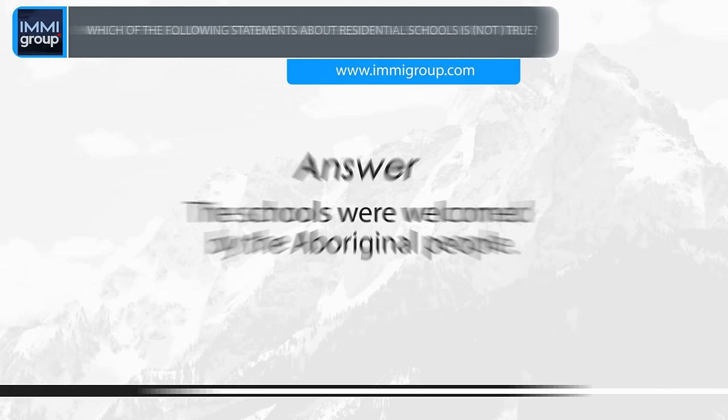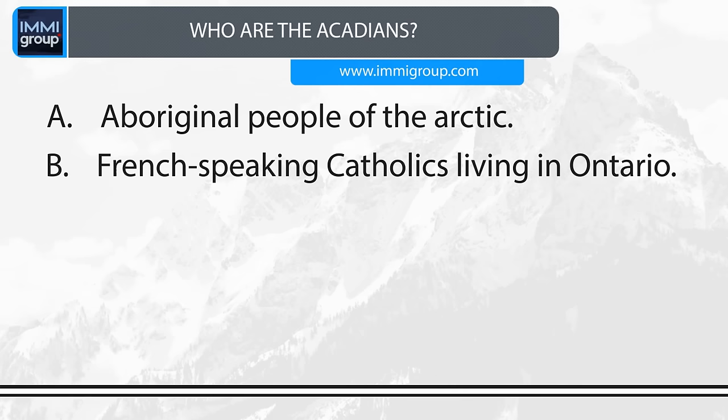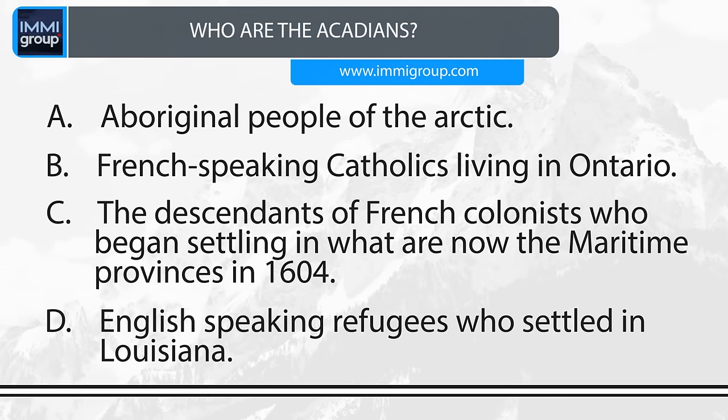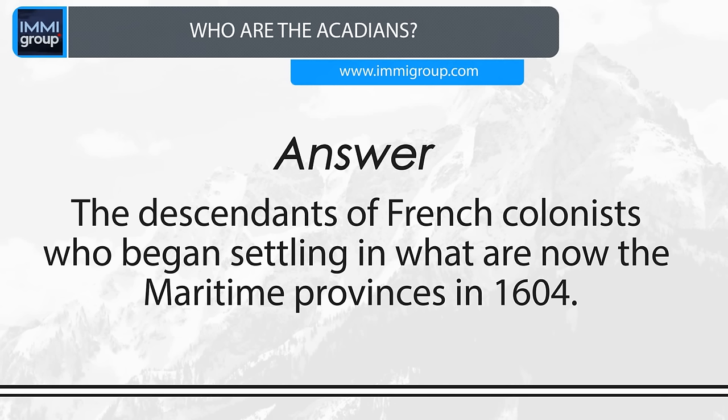Who are the Acadians? A. Aboriginal people of the Arctic. B. French-speaking Catholics living in Ontario. C. The descendants of French colonists who began settling in what are now the Maritime Provinces in 1604. D. English-speaking refugees who settled in Louisiana. Answer: The descendants of French colonists who began settling in what are now the Maritime Provinces in 1604.